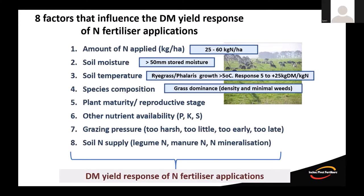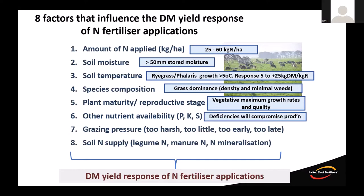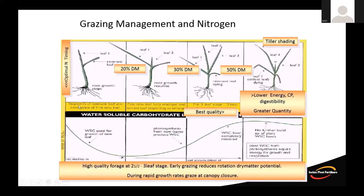Species composition matters: grass dominance, density in the pasture sward, and minimal weeds are important to ensure a good response. Plant maturity and reproductive stage — while the pasture is vegetative, maximum growth rates and quality occur. Ensure base fertility including phosphorus, potassium and sulfur are in check — applying nitrogen with good base fertility will ensure a good response. Grazing pressure is also a key factor.